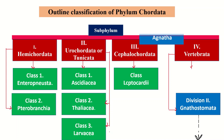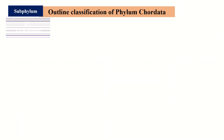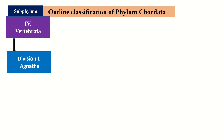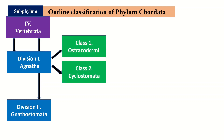Subphylum Vertebrata has two divisions: division one is called Agnatha, and division two is called Gnathostomata. Division Agnatha is again divided into two classes.